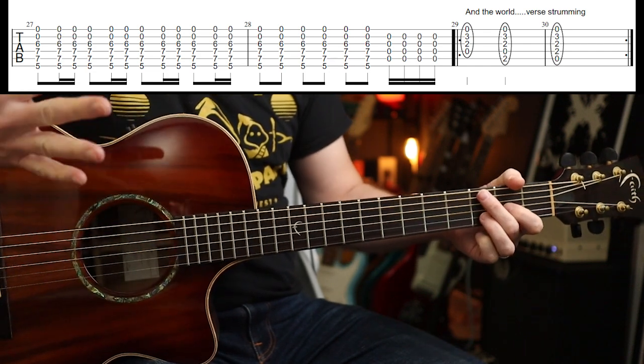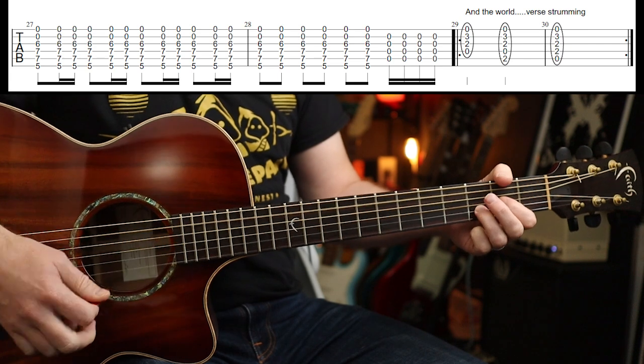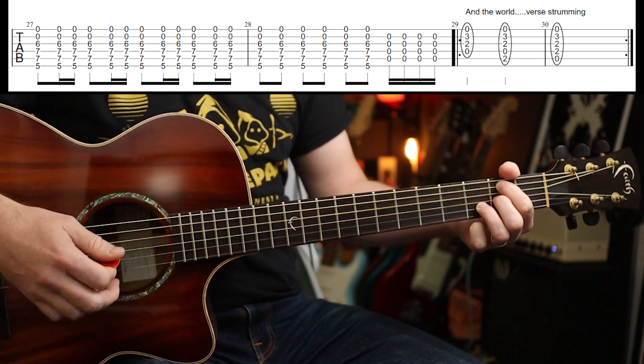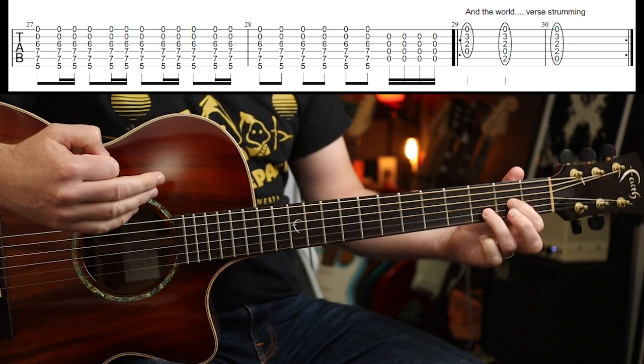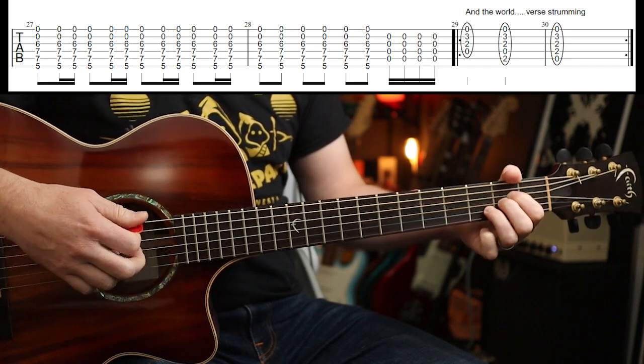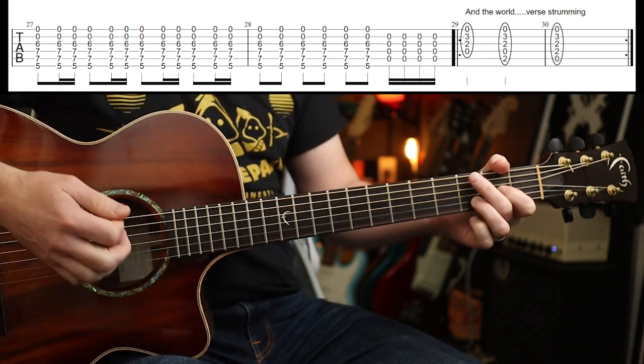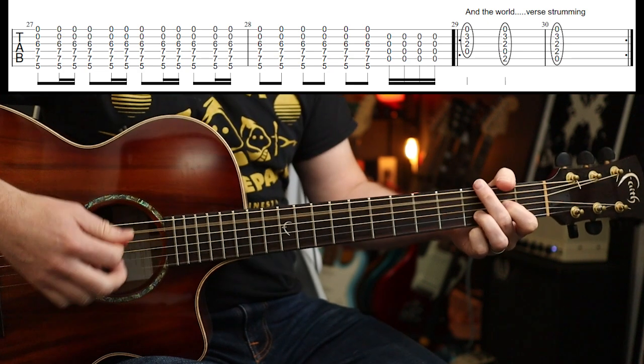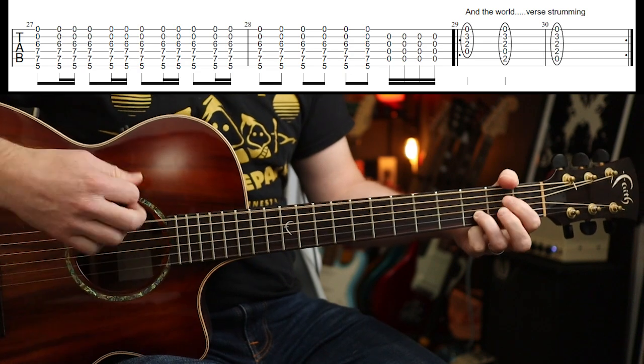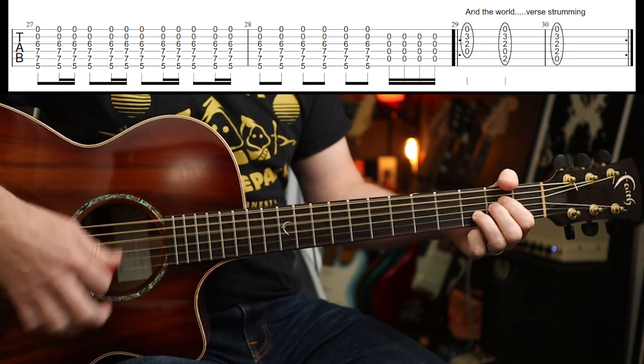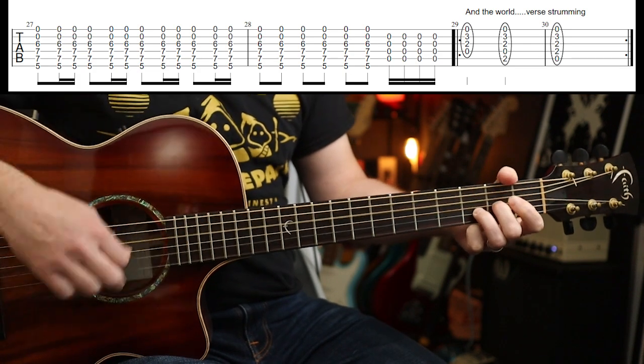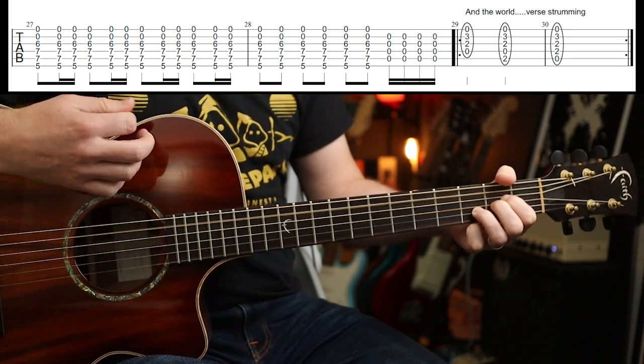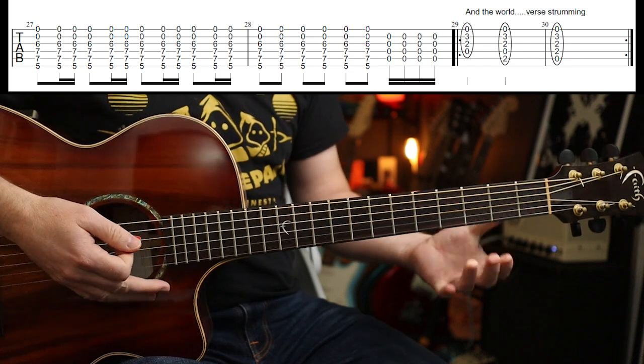And then the vocal part goes into the 'and the world' part with those chords. So, this time, we're going to be going D to B to A. But with the same strumming. All right.